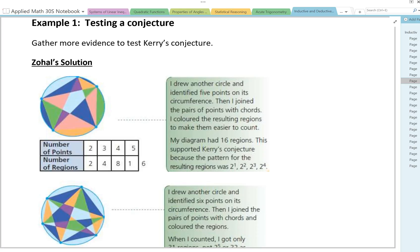So we're going to gather more evidence to test Carrie's conjecture. Zohal tried this as well. She said, I drew another circle and identified 5 points on its circumference. Then I joined the pairs of points with cords. I colored the resulting regions to make them easier to count. My diagram had 16 regions. This supported Carrie's conjecture because the pattern for the resulting regions was 2 to the exponent of 1, 2 to the exponent of 2, 2 to the exponent of 3, 2 to the exponent of 4. So Zohal's solution showed that this was true.